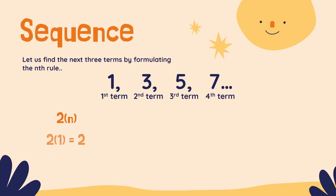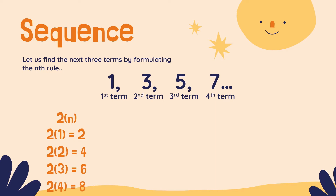So, the first term using 2N: 2 times 1 equals 2; 2 times 2 equals 4; 2 times 3 equals 6; and 2 times 4 equals 8. That gives us 2, 4, 6, 8. But our sequence is 1, 3, 5, 7 — so it also adds 2, but it's not the same as our sequence.